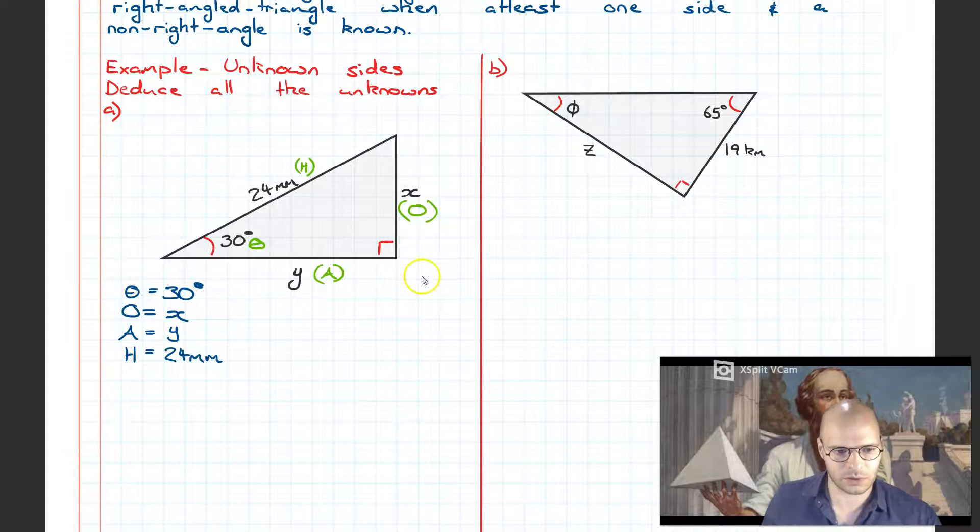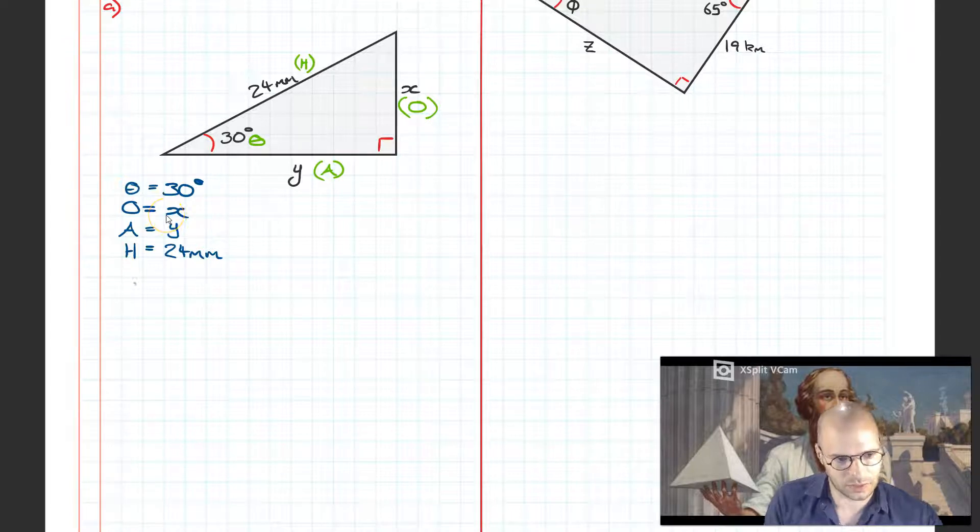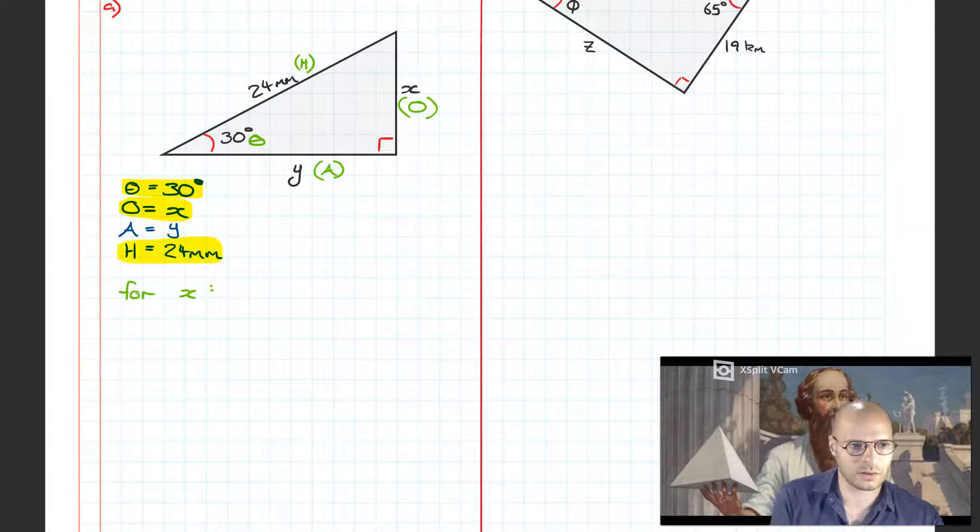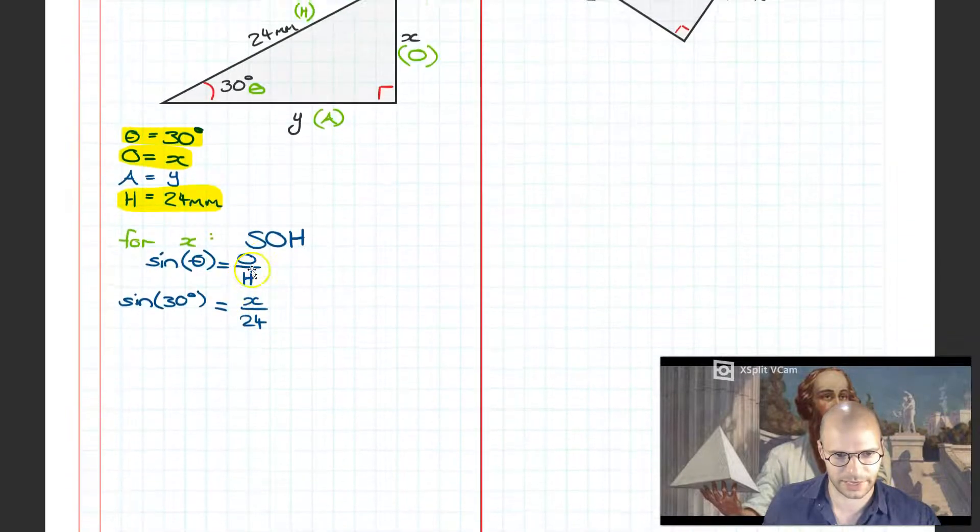Next step is we need to pick the quantity we want to solve for. In this case I'm going to start with X. I need to decide which ratio is going to be useful for deducing the value of X. What I have in my list is I have theta, I want to find X, and I have a value of 24. So I've got theta, the opposite, and the hypotenuse. We're looking at SOH, it stands for sine. So we have sine theta is equal to the opposite over the hypotenuse.